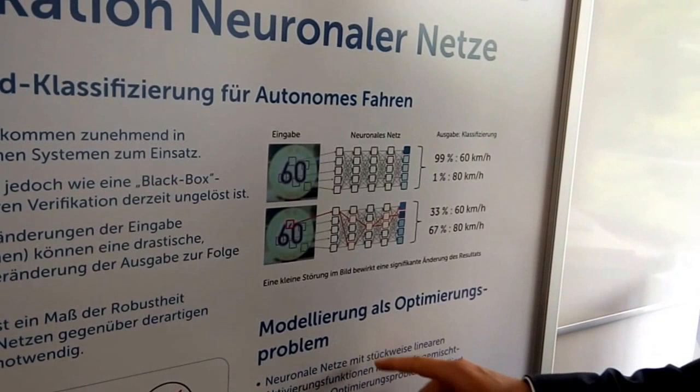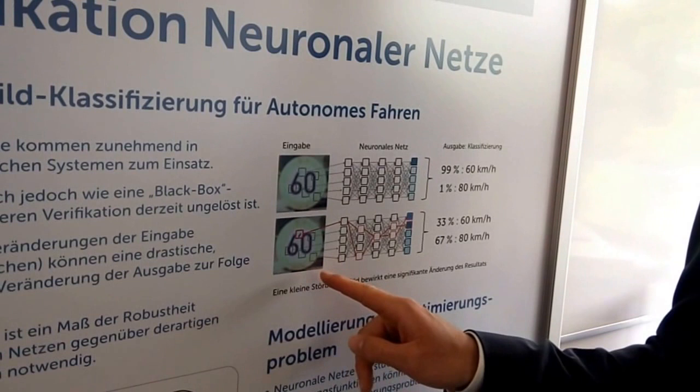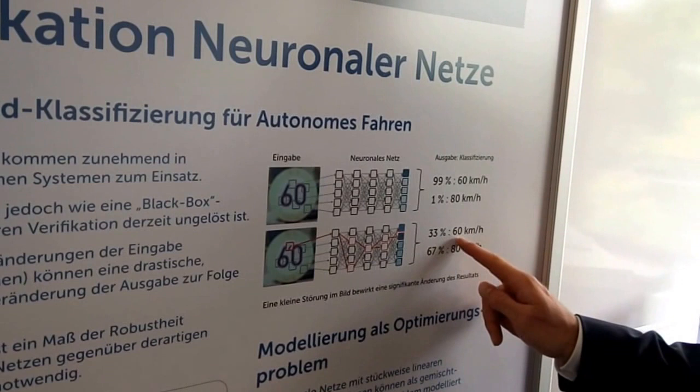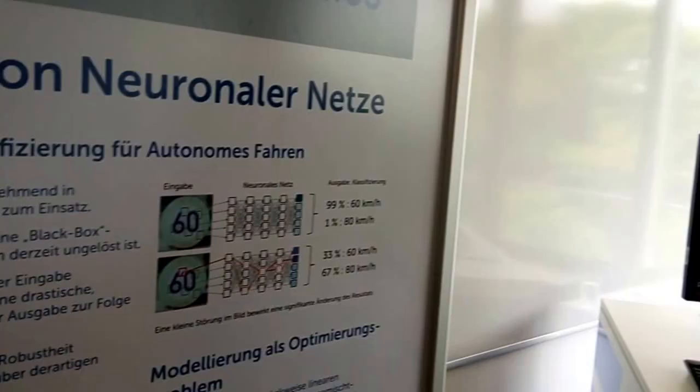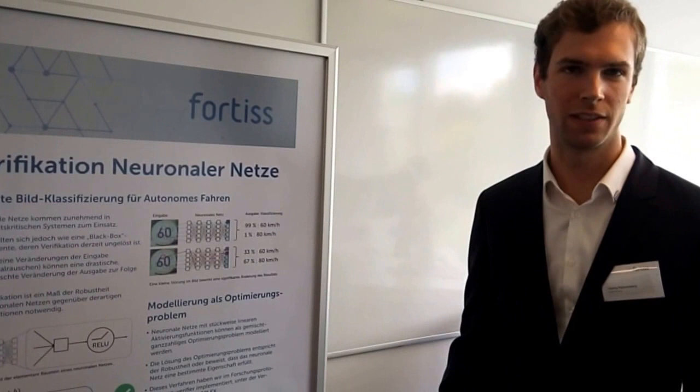Then we have a modified image where there is some small dirt on the street sign. And then suddenly the network only classifies 60 with 33%, and with two-thirds it classifies the sign as 80 kilometers per hour. Of course, this can lead to a safety threat if an autonomous vehicle drives 80 kilometers per hour instead of 60 kilometers per hour.